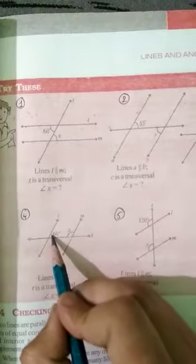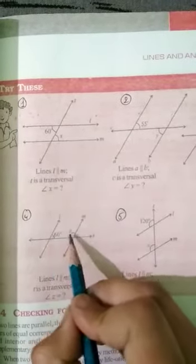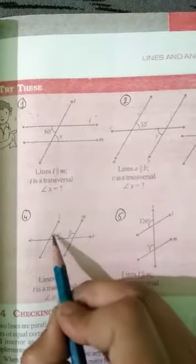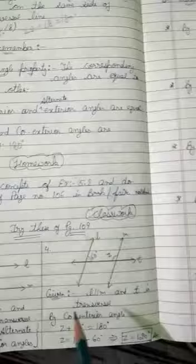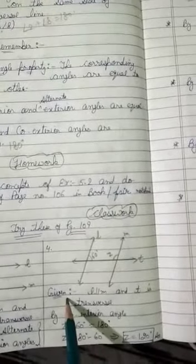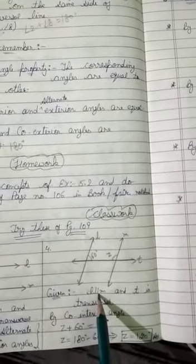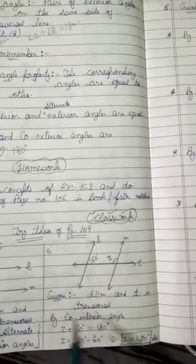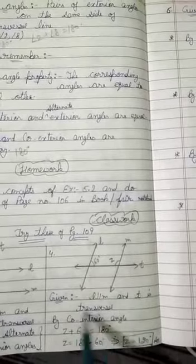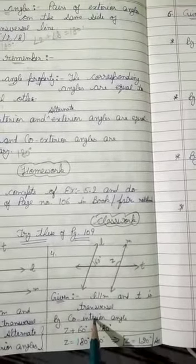These are the interior as well as on the same side of transversal line. So they are forming co-interior angles. Firstly, you will draw the figure here. And then you will write what is given. It is given that L is parallel to M and T is transversal. So by co-interior angle. Now if you are not able to understand this co-interior angle, then just remember the angles which we have done yesterday.